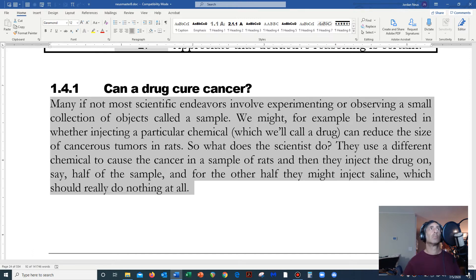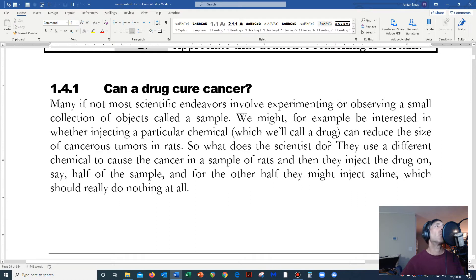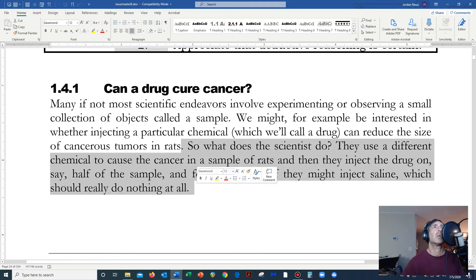They use a different chemical to cause the cancer in a sample of rats, and then they inject... Oh, this is something that surprises some of my students. You know, there are no rat catchers like in the New York City subway system that go around searching for cancerous rats, and they go, hey John, look, I got a good one. I got a cancerous rat. Okay, we'll use this. We'll give this to the scientists. Come on, that would be ridiculous.